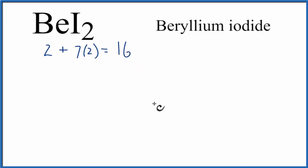We'll put Be in the center, it's the least electronegative. And then we'll put iodine on either side.